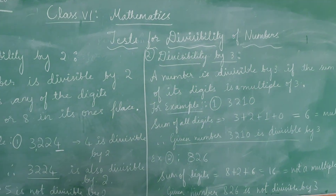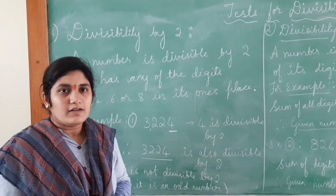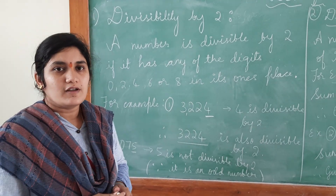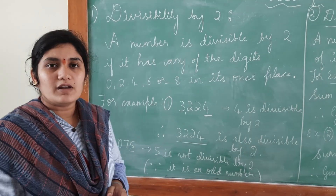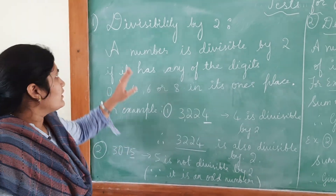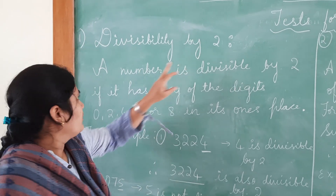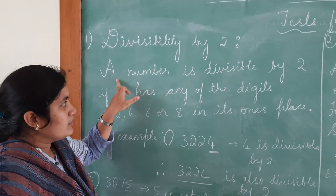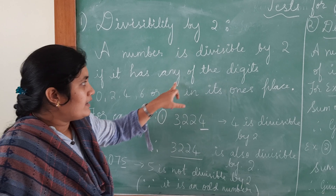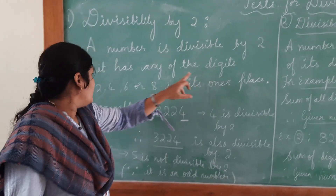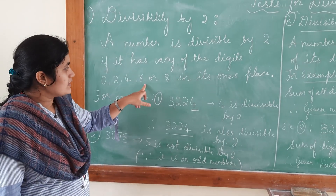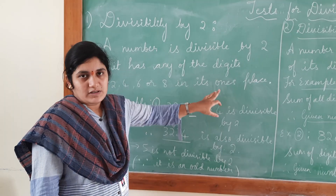What are the tests for divisibility of numbers? We are going to test some of the divisibility rules which will decide whether the given number is divisible by 2 or not. A number is divisible by 2 if it has any of the digits 0, 2, 4, 6, or 8 in its ones place.